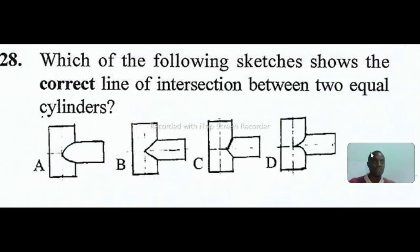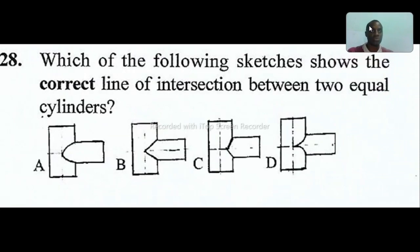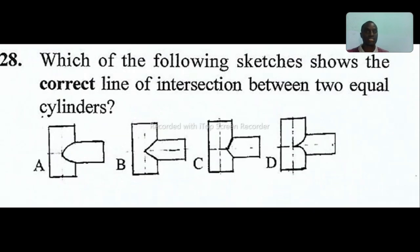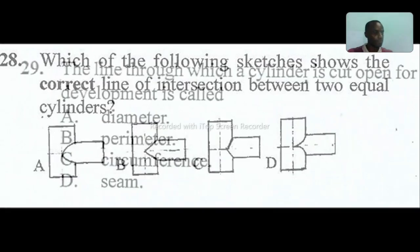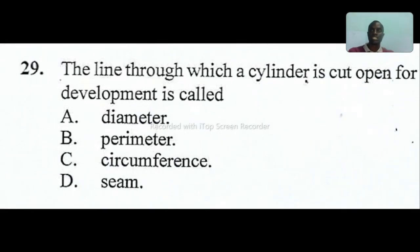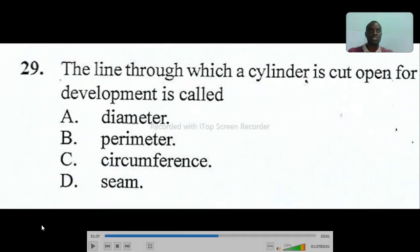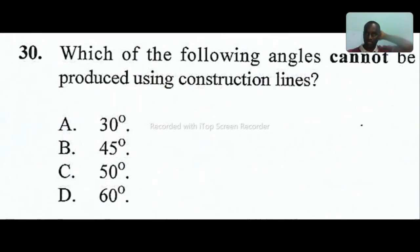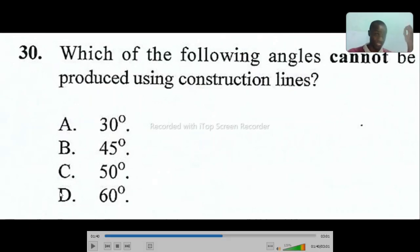Question twenty-eight: which of the following sketches shows the correct line of intersection between two equal cylinders? The answer is C. It must be a straight line here and here, touching the center line where the two lines meet. Question twenty-nine: the line through which the cylinder is cut open for development is called seam. Question thirty: which of the following angles cannot be produced using construction line? Fifty degrees, you cannot construct using construction line.